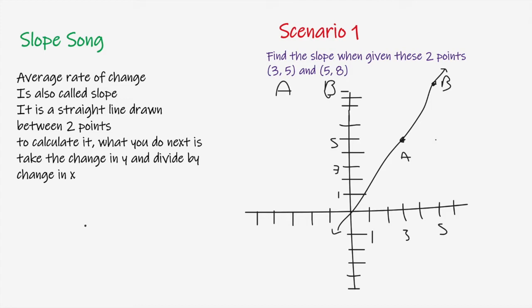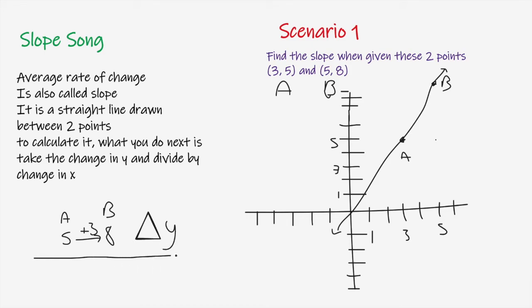Let's find the change in y from point A to point B. In point A the y-value is 5, and in point B the y-value is 8. What do you have to do to get from 5 to 8? You add 3. So the change in y is +3.